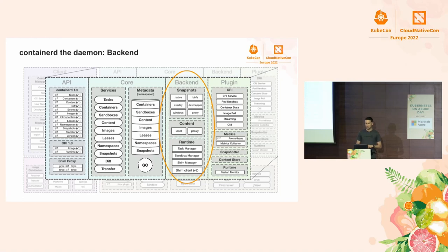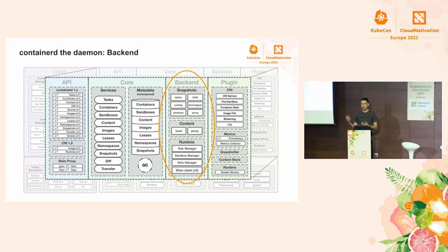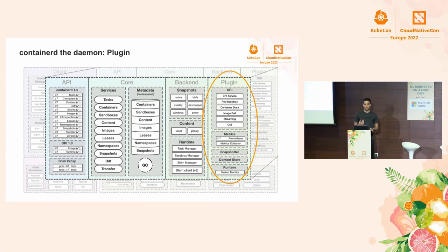The backend is where we have solid implementations like snapshotters. The overlay snapshotter handles on-disk storage of snapshots. The content store holds all blobs and artifacts fetched from registries. The runtime backends manage actual container processes, sandboxes, and running tasks. We focus a lot on pluggability in ContainerD — pretty much every component is designed as a plugin. CRI itself is written as a plugin that uses every other plugin. Other examples include the StarGZ snapshotter for lazy image loading, and a restart plugin for containers.